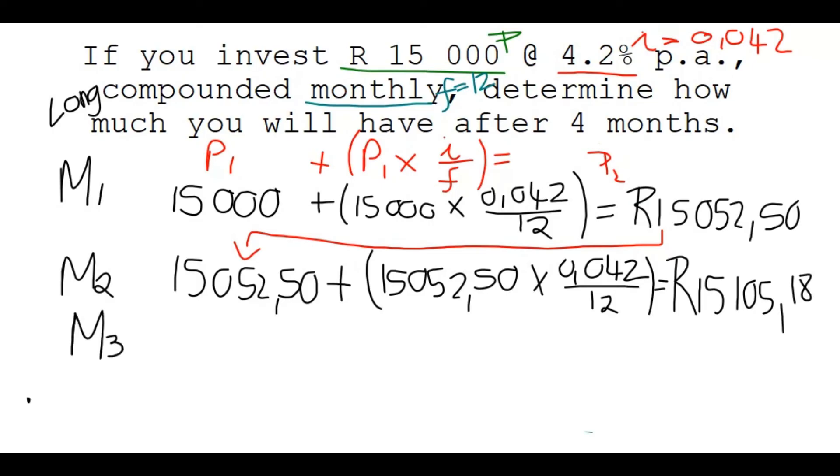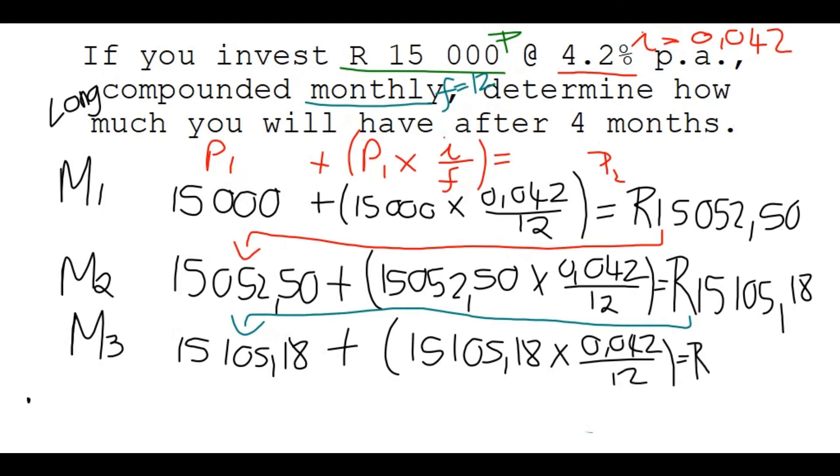So this person invested, or you invested money for 4 months, so we go to month 3. We now again start with this ending amount. So when you start with it, you put it in 15,105, 18 cents, plus make brackets, you find your interest on that amount again. So you multiply it by 0.042 over 12, and you get 15,158 Rand and 5 cents.